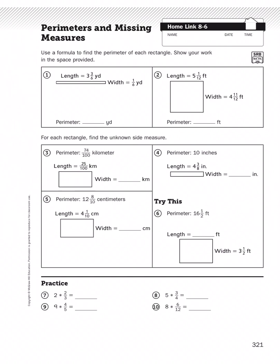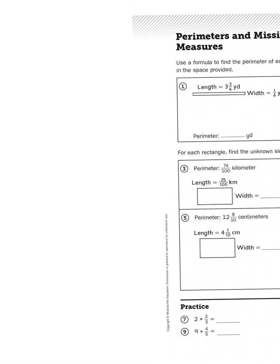Use a formula to find the perimeter of each rectangle. Show your work in the space provided. Now there are a couple of formulas we can use to find the perimeter of a rectangle when we know both side measurements. The first one is just an addition problem: length plus length plus width plus width equals perimeter. Four sides to a rectangle, so you're going to be adding four numbers to get your sum, which is your perimeter.